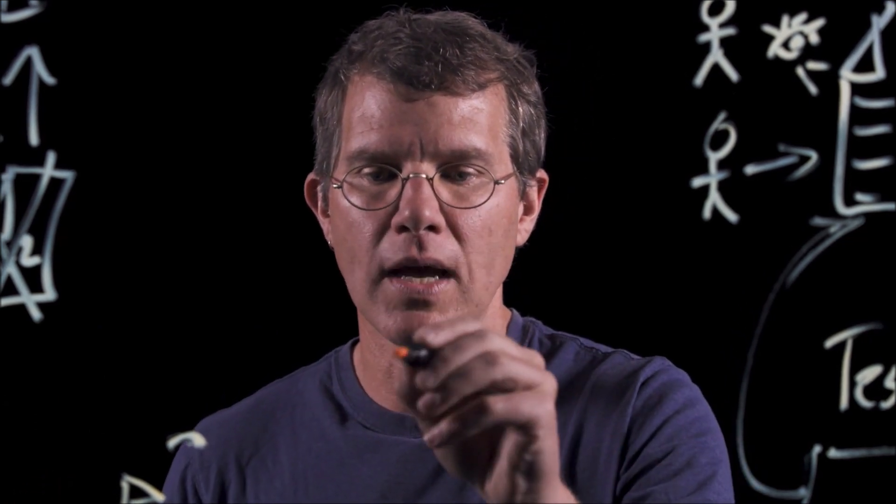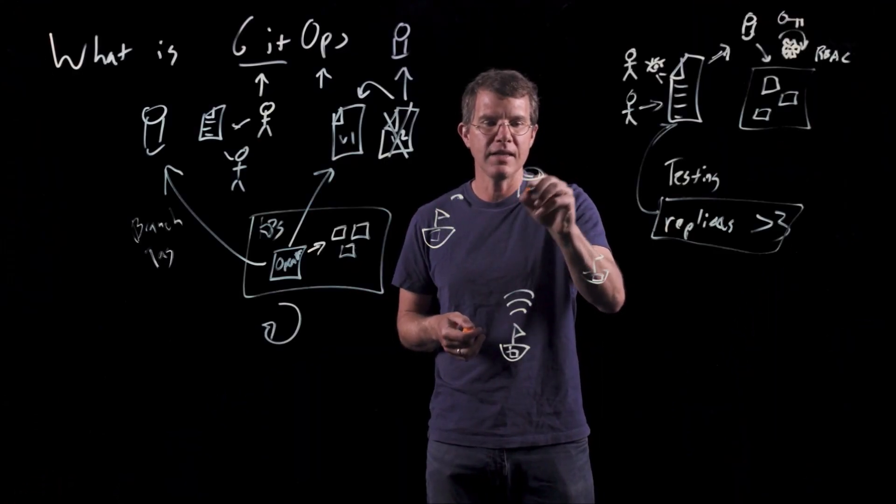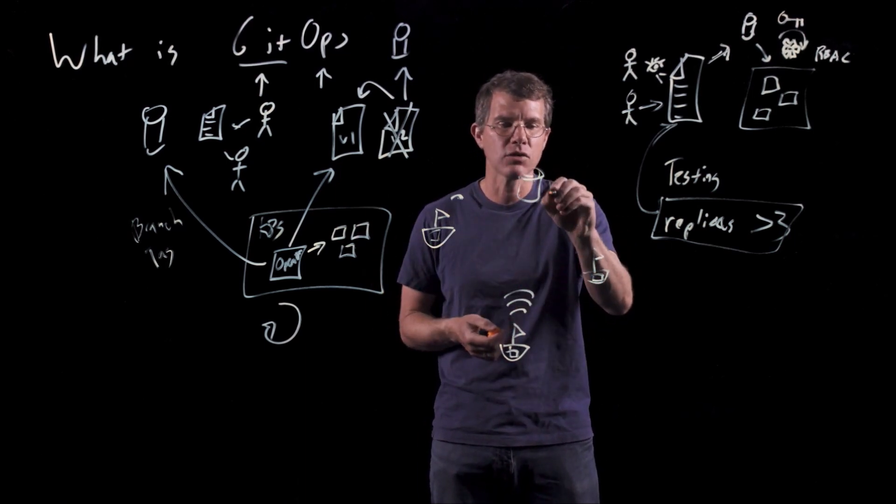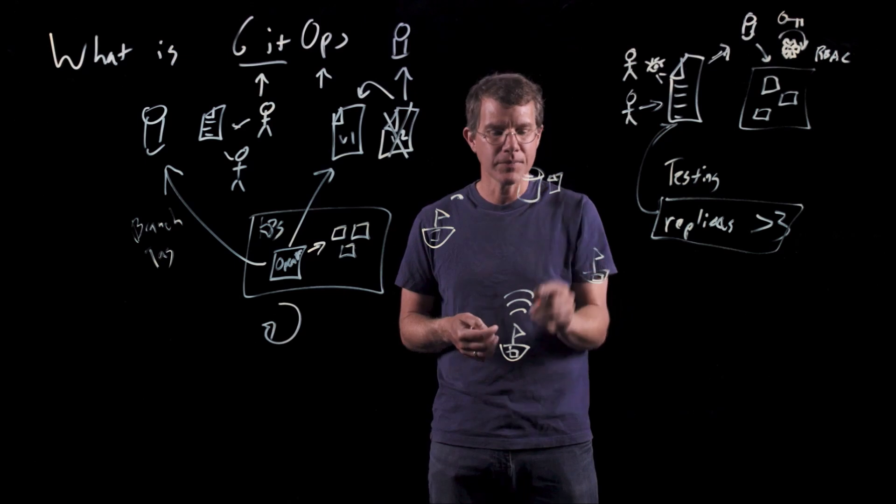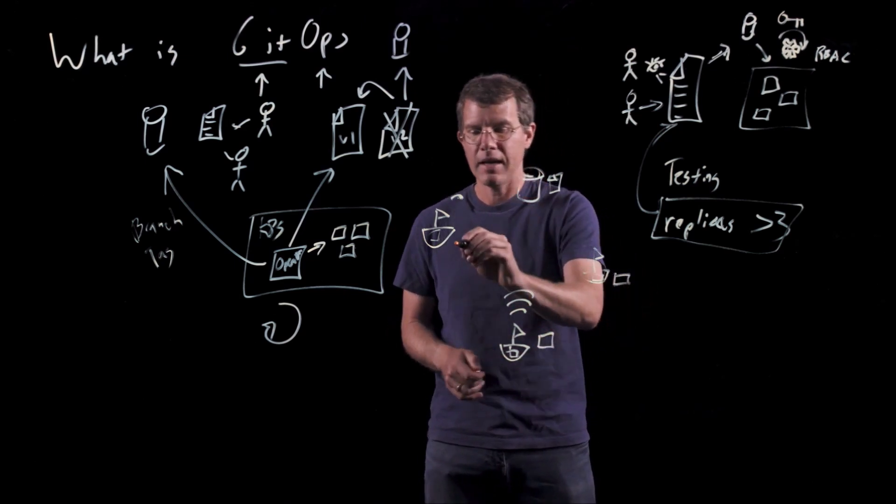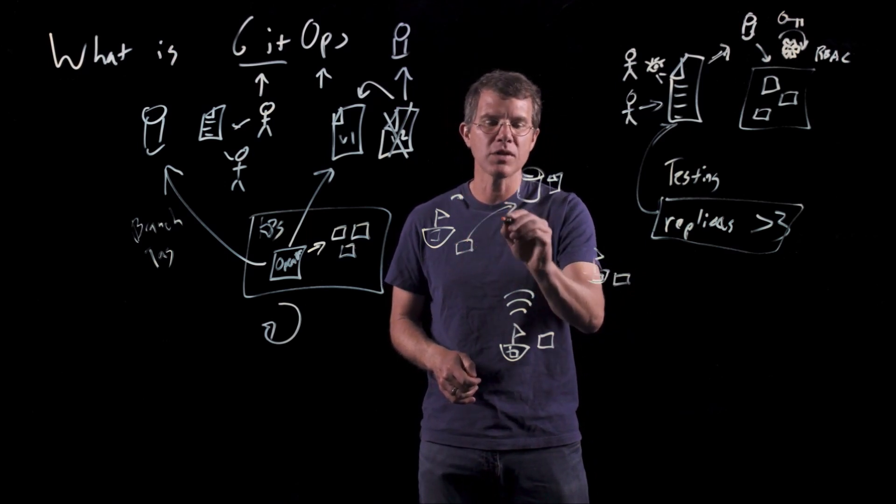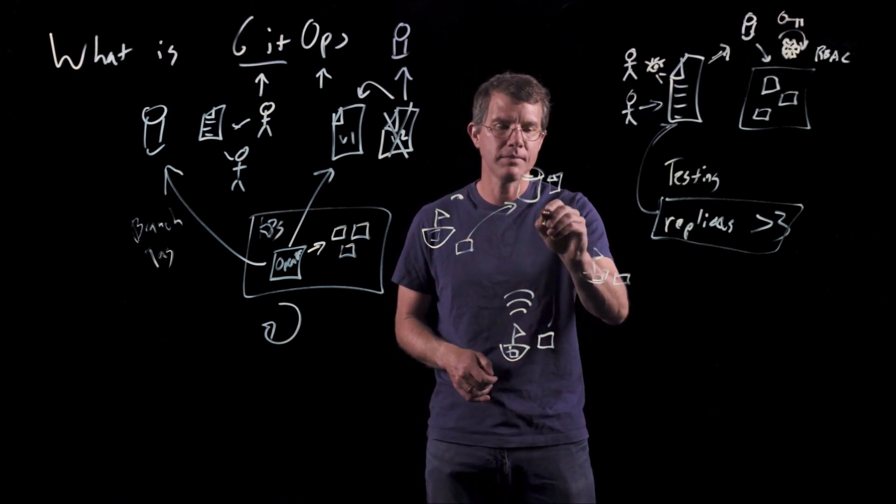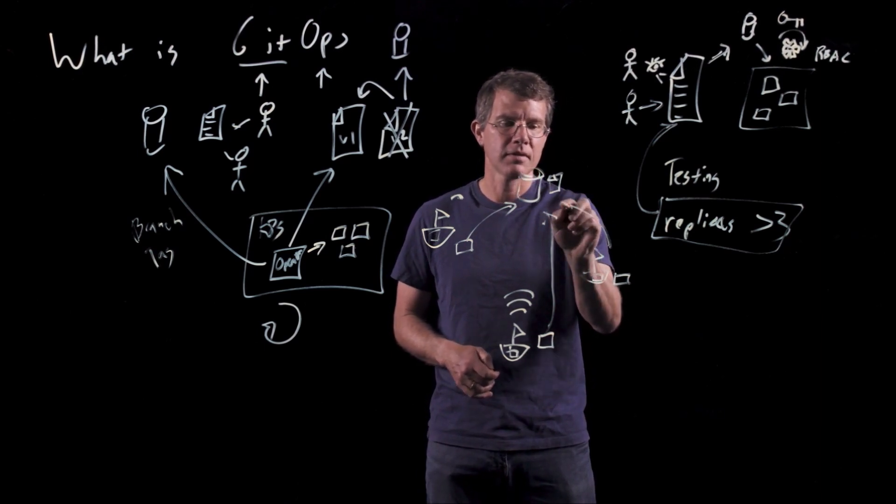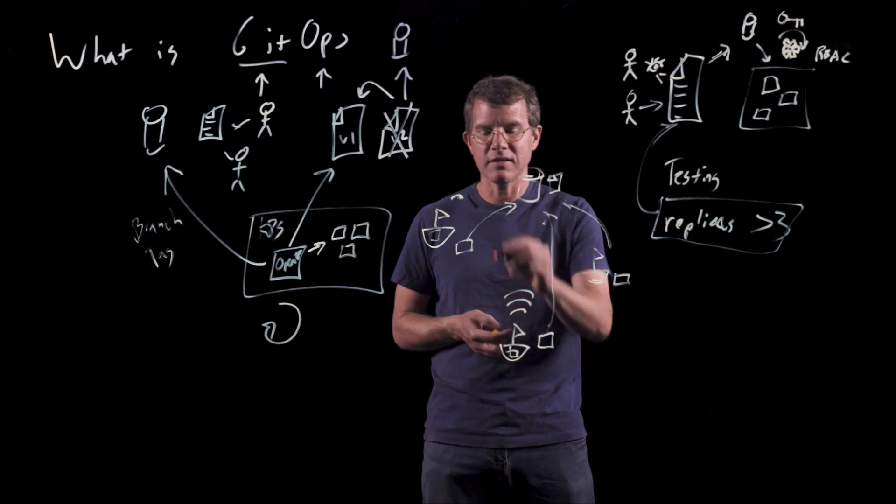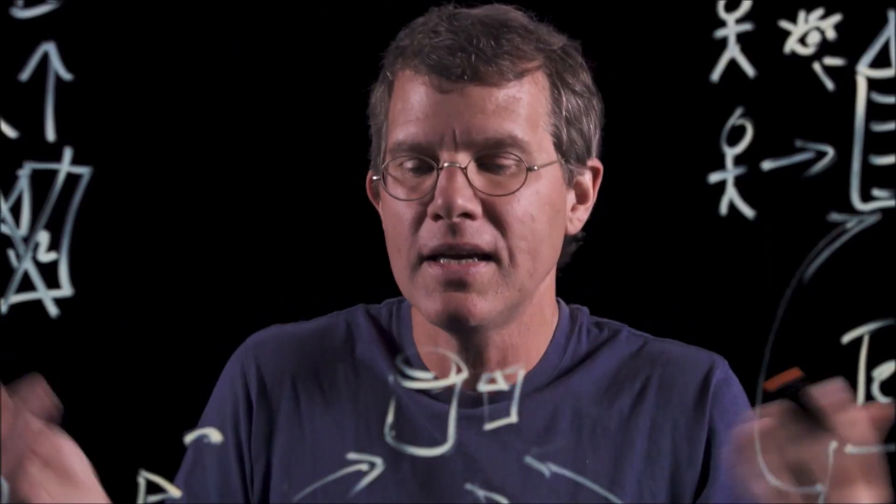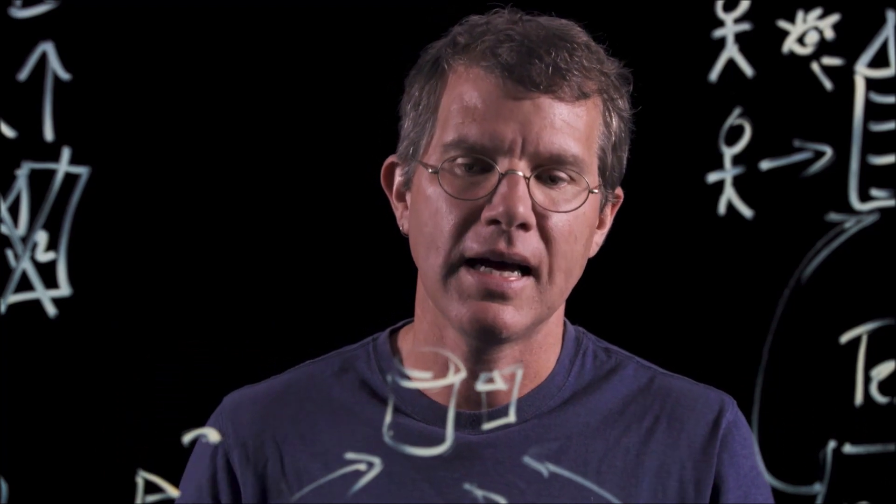GitOps is a great fit for managing these clusters at scale. And the reason for that is because we have our Git repository, and it's at the center of the configuration, it has stored in it the desired state. Now, on each of these clusters, you have the GitOps operator. And that GitOps operator is always watching, no matter what. It's always watching the Git repo. Now, the good thing about that is if sometimes it can't watch it, if there's a network problem, and it can't watch the repo, it doesn't matter, it's going to try later.